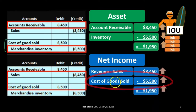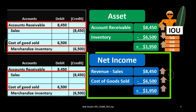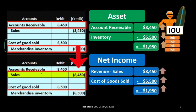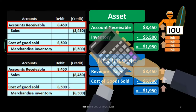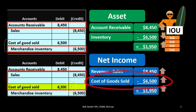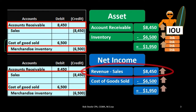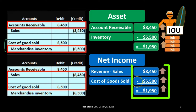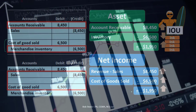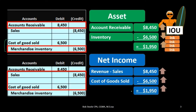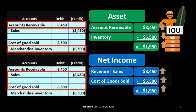Sales is going up by $8,450 and cost of goods sold — the expense related to the inventory — is going up, which brings net income down. Net income is calculated as revenue minus expenses, so cost of goods sold going up brings net income down. We subtract the two and get the increase in net income of $1,950. That increase in net income, being part of equity, means assets increase by the same amount as equity.